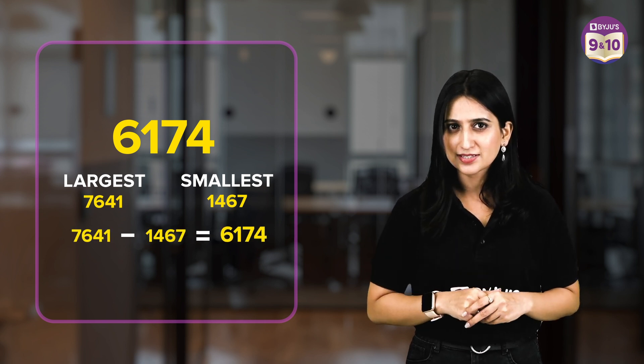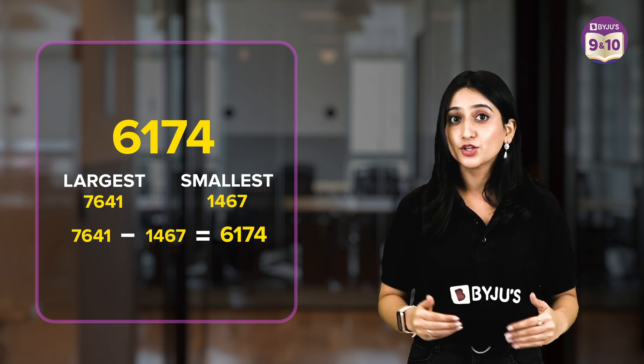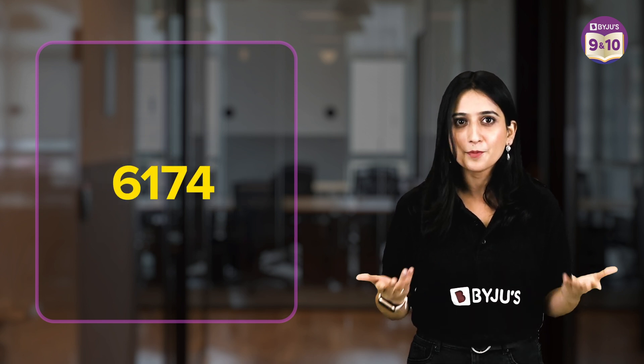Notice something interesting? We got the original number back. If we repeat this process with any 4-digit number with at least 2 different digits, we will always end up at 6174 after a few iterations.